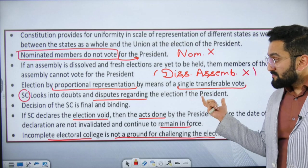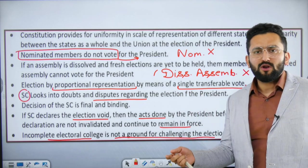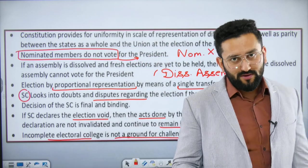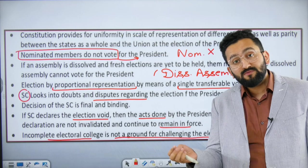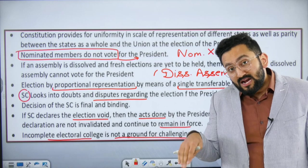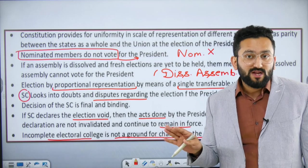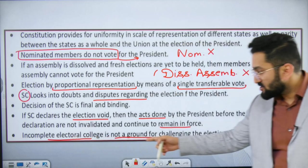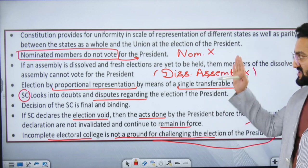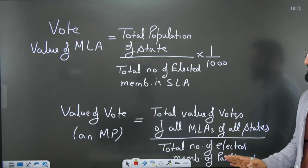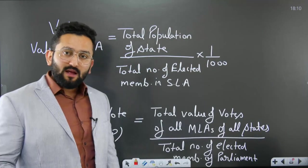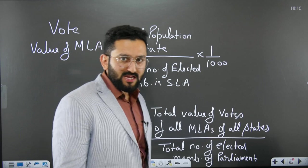An incomplete electoral college — meaning some state legislative assemblies are dissolved and those states have no elected MLAs — is not a ground for challenging the election of President. The election will proceed even if the electoral college is incomplete.